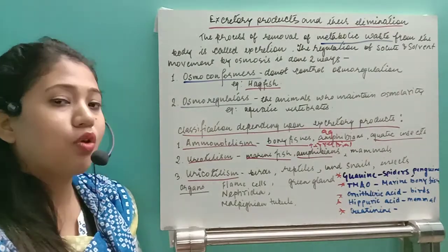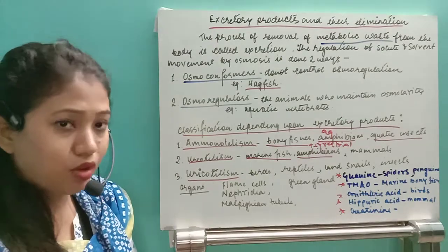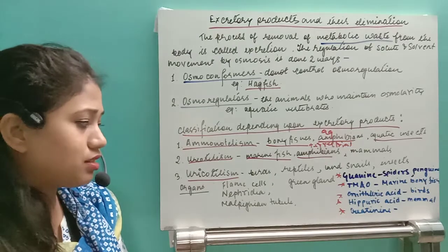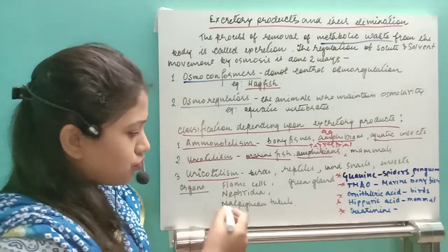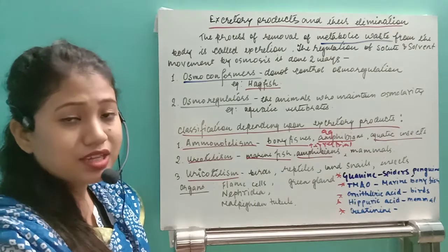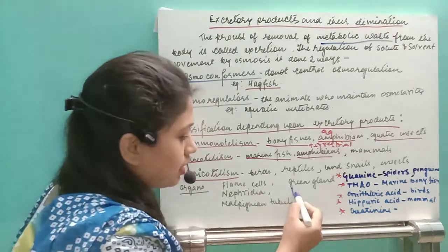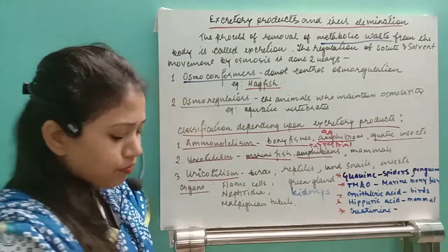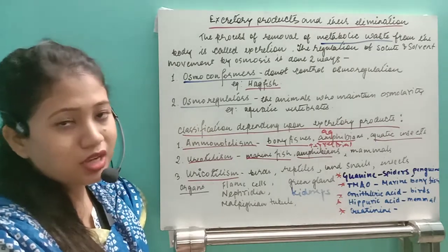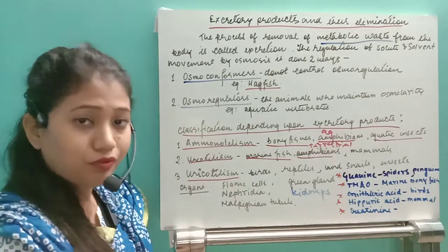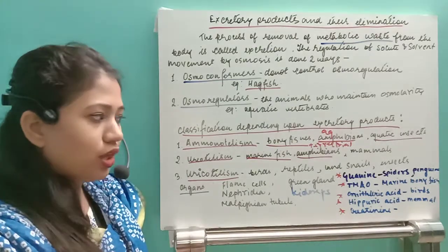Different excretory organs exist across organisms. Flame cells are found in platyhelminthes. Nephridia are present in annelids. Renette cells are present in aschelminthes. Malpighian tubules and green glands are present in arthropods. Kidneys are present in vertebrates and chordates. There are three types of kidneys: pronephric, mesonephric, and metanephric. Humans, being the most complex organisms, have metanephric kidneys.